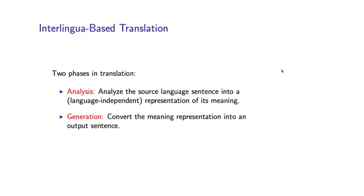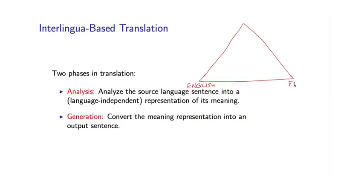One useful diagram that people often use to characterize different translation systems is called the translation pyramid. So I have English over here, and let's say I'm trying to translate into French over here. In direct translation systems, we directly translate from English to French, so we just draw an arrow here.